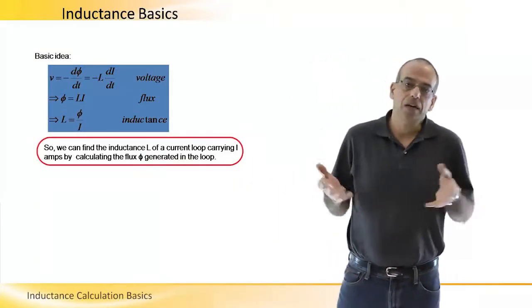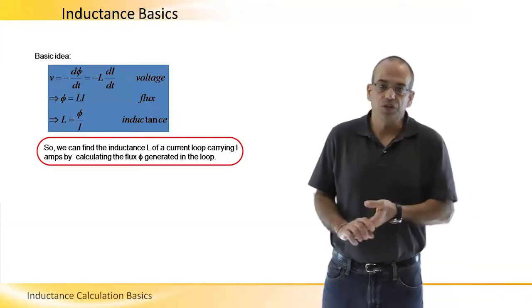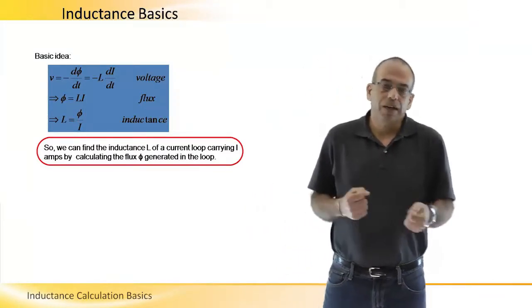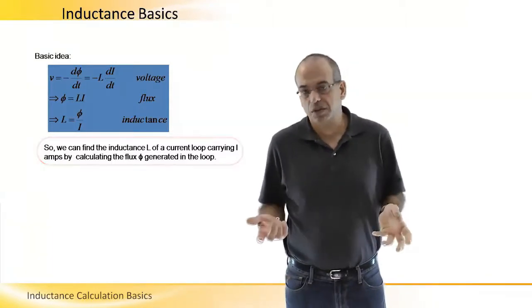If we want to find the inductance of a current loop, what we need to do is find the flux generated in the loop, and by dividing it or normalizing it to the current that is generating this flux, we can calculate the inductance.